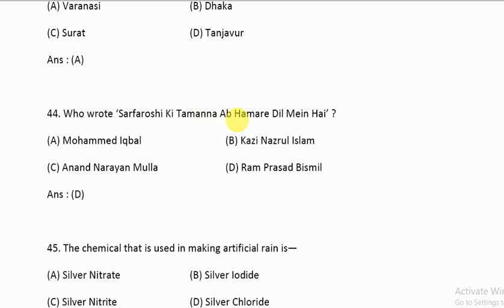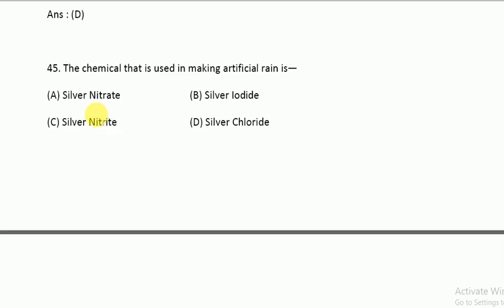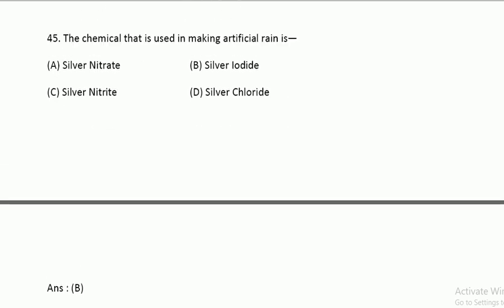Who wrote 'Sarfaroshi ki Tamanna ab Hamare Dil Mein Hai'? This poem was written by Ram Prasad Bismil. The chemical used in making artificial rain is Silver Iodide.